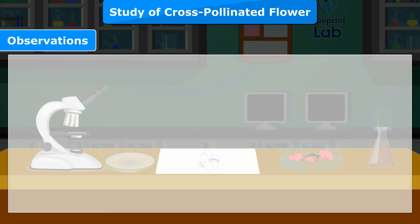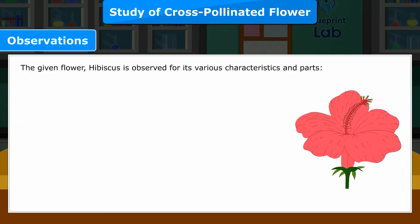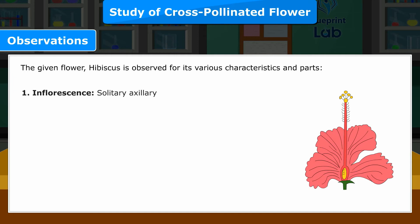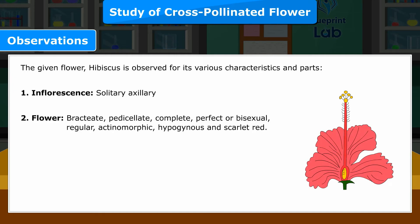Observations: The given flower, hibiscus, is observed for its various characteristics and parts. 1. Inflorescence — Solitary, axillary. 2. Flower — Bracteate, pedicellate, complete, perfect or bisexual, regular, actinomorphic, hypogynous, and scarlet red. 3. Epicalyx — 5 to 7, green, free, encircling the calyx.